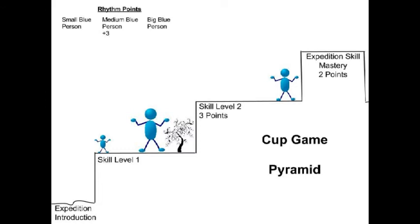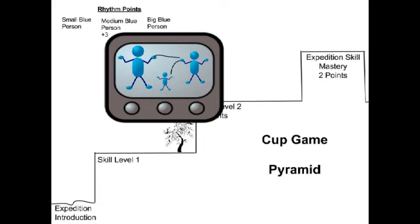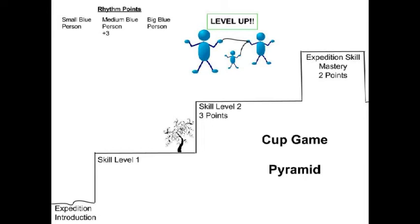They decide to try, so medium blue person helps them practice until they master rhythm skill level 1. It's sort of like medium blue person is throwing them ropes to help them up to the next level. They take a video of all three of them performing the skill together, submit it to the rhythm experts, and their video is approved and they level up.